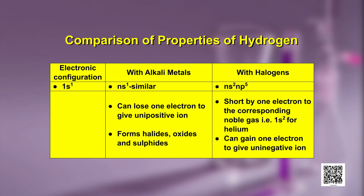Let us first compare the similarities and then we will see what dissimilarities hydrogen has with alkali metals or with halogens. The electronic configuration of hydrogen is 1s1, and for alkali metals the electronic configuration is given as ns1, where n stands for the principal quantum number, with configurations 2s1, 3s1, 4s1, and so on. So hydrogen is similar in electronic configuration to the alkali metals.